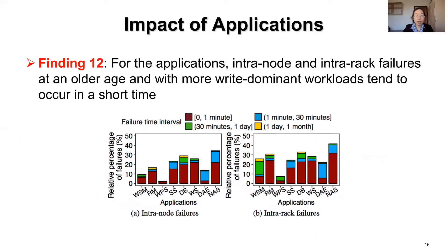We next vary the thresholds of the intranode and intrarack failure time intervals. The figure shows that the relative percentages of intranode and intrarack failures for different thresholds vary across applications. By further examining the average ages of failures for the applications, we find that intranode and intrarack failures at an older age with more write-dominant workloads tend to occur in a short time.